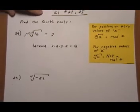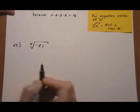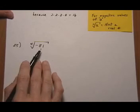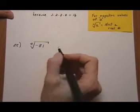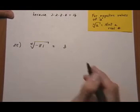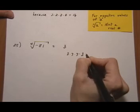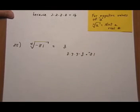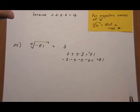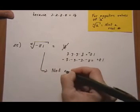Now let's see what happens if we have the negative instead. We want a number times itself four times that gives us negative 81. Just like with a square root, we can't multiply a number times itself four times and get a negative out of it. The fourth root of positive 81 would be 3, but 3 times 3 times 3 times 3 is positive 81. And negative 3 times itself four times still gives us positive 81. So we're stuck — the answer is not a real number.